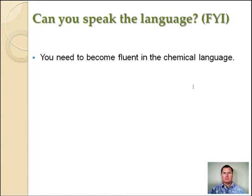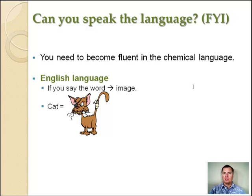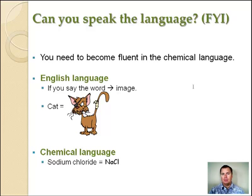Can you speak the language of chemistry? What you need to be able to do is become fluid in this language. You're already fluid in English. For example, in English, when we say a word, we get an image. So if I say the word cat, I'm going to get an image of a cat. In chemistry, when I say sodium chloride, I need to think NaCl. That's its chemical formula. And that's what we're talking about, learning to speak the language of chemistry. You need to be able to think and write these chemical formulas.